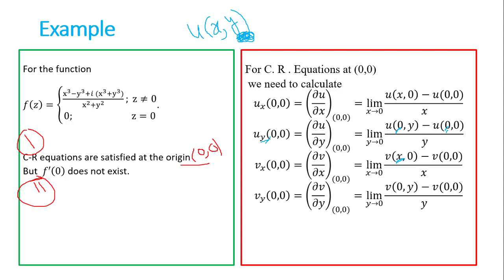CR equations means we need to calculate ux, uy, vx, and vy at what point? At (0,0). We need to calculate ux at (0,0). Similarly, uy at (0,0), vx at (0,0), and vy at (0,0). Calculating ux at (0,0) doesn't mean we directly differentiate, because F(z) is given in intervals — for z not equal to 0, different values are given, and for z equal to 0, different values are given. In such cases, we will go by first principle.